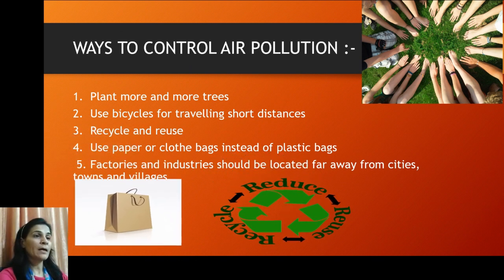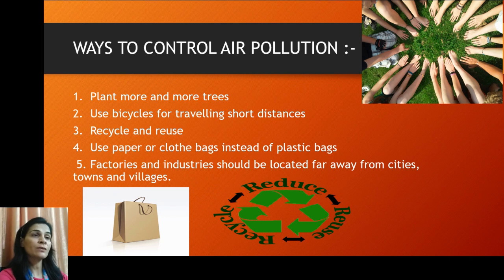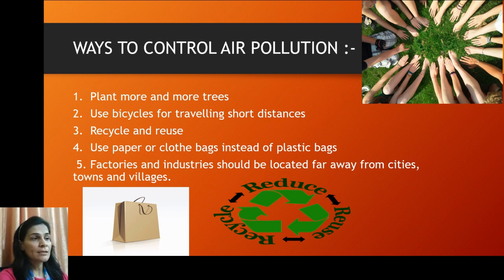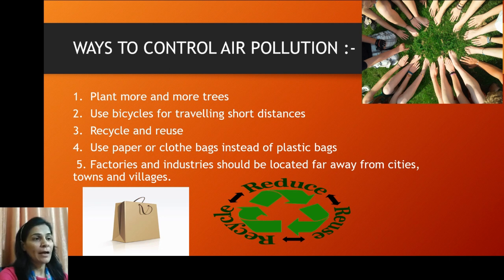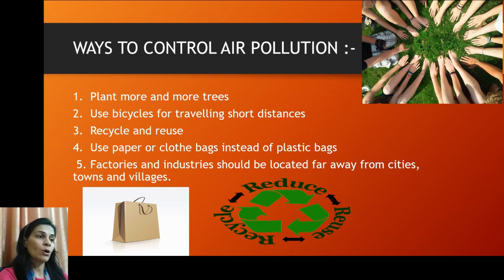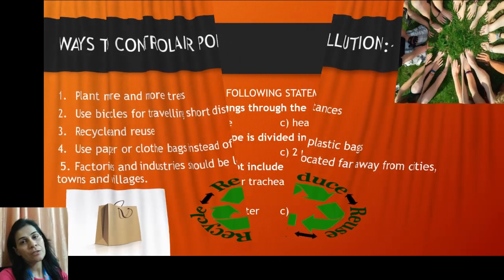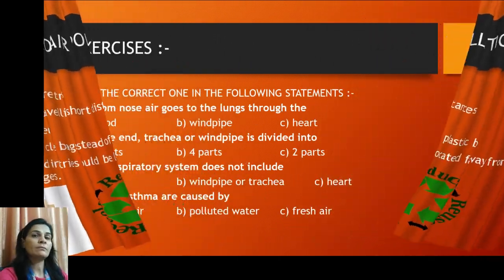Now here are the ways to control air pollution. First, plant more and more trees. Second, use bicycles for traveling short distances. Third, recycle, reuse, and reduce — as you can see in the logo. Fourth, use paper or cloth bags instead of plastic bags when you go to the market. And last, factories and industries should be located far from cities, towns, and villages.